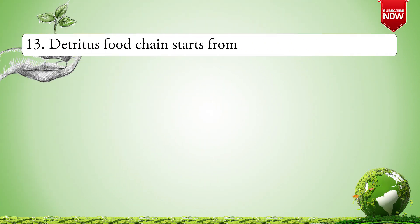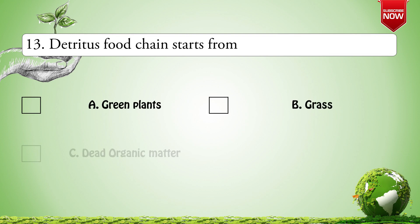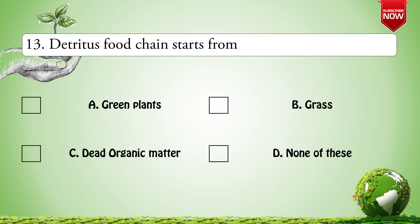Next question: The detritus food chain starts from — Options are: A. Green plants; B. Grass; C. Dead organic matter; D. None of these. The correct option is C: Dead organic matter.